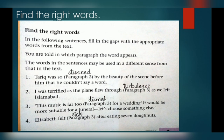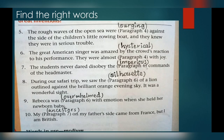Number 3: This music is far too dismal for a wedding — it would be more suitable for a funeral. Let's choose something else. 'Dismal' means udas, rangeen. Number 4: Elizabeth felt sick after eating seven donuts. 'Sick' means bimar. Number 5: The rough waves of the open sea were surging against the side of the children's little rowing boat, and they knew they were in serious trouble.